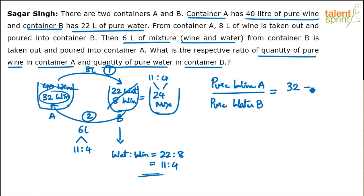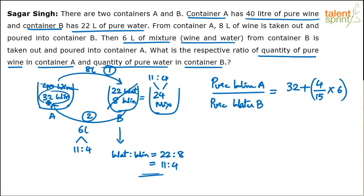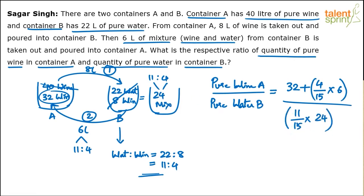Pure wine in A: already 32 liters, plus the wine portion from the 6 liters of mixture added. Since water-to-wine ratio is 11:4, out of 6 liters, wine = 4 out of 15 parts, so wine added = (4/15) × 6. Pure wine in A = 32 + (4/15) × 6. For pure water in B: the 24 liters remaining is in 11:4 ratio, so water = (11/15) × 24.